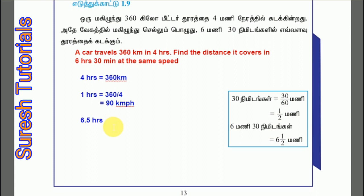I will go to 6.5 hours. So 90 km per hour into 6.5 hours equals 585 km. So in 6.5 hours the car will travel 585 km.